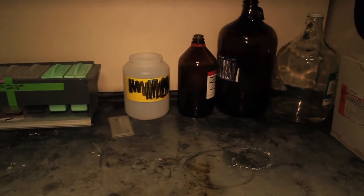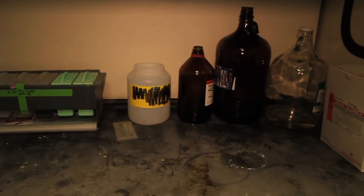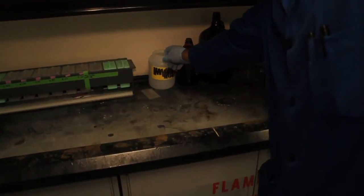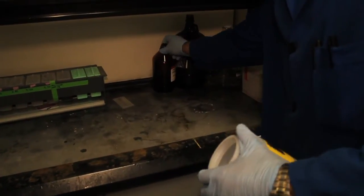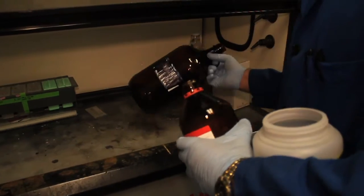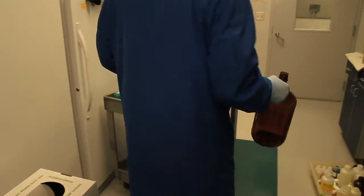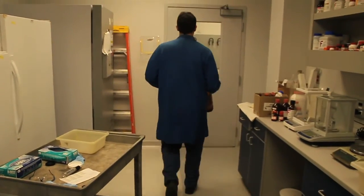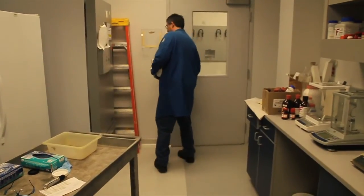After the large empty chemical containers are dry, they are ready for disposal outside of the lab. The janitorial staff will only take empty chemical bottles that do not have a lid, are completely dry, and do not have any chemical residue in them.